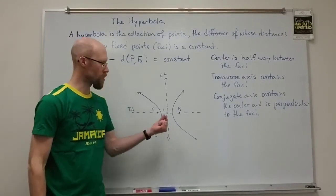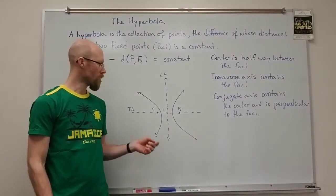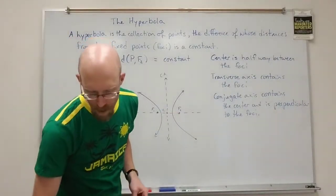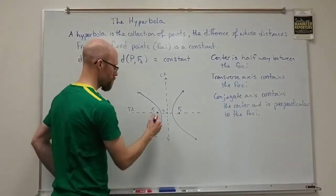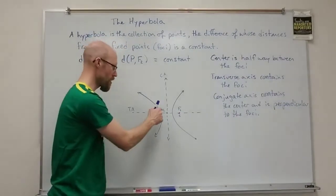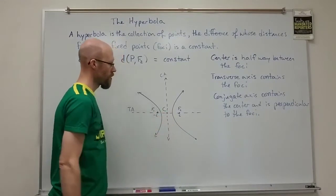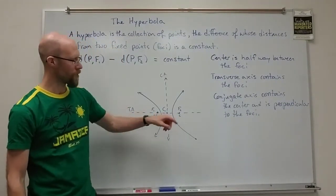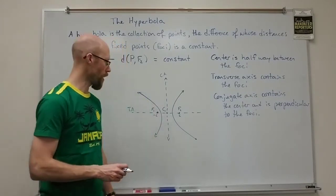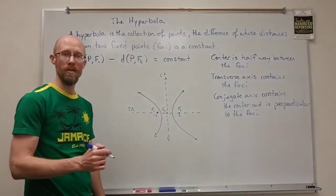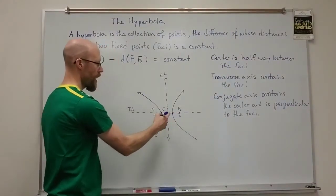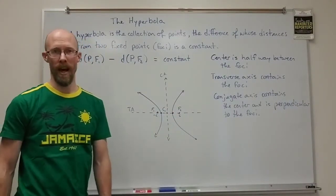When we derive the formula, we center this at the origin and put the foci at plus and minus little c on the x-axis — those are the coordinates of your foci. The vertices are the points of intersection of the actual hyperbola with the transverse axis.